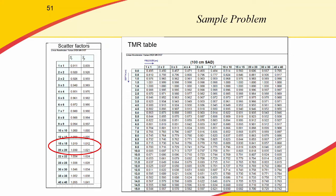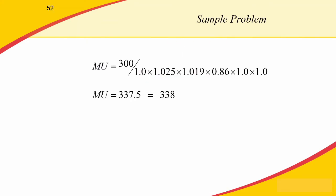Then we go to our TMR table, since we're set up and delivering isocentrically, and we assume calibration was done isocentrically. Again, we have 15 by 15 and 20 by 20 field sizes in our table. We scroll down to 8 cm depth for our calculation, where we have values of 0.855 and 0.863. We interpolate between those to get our TMR value of approximately 0.86, then plug those into our equation.